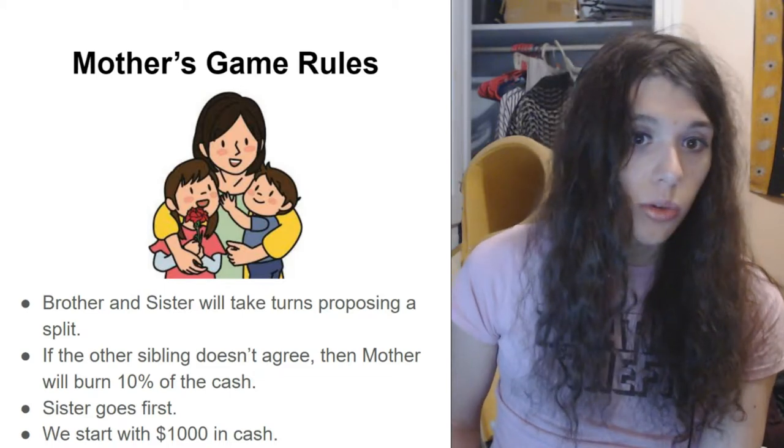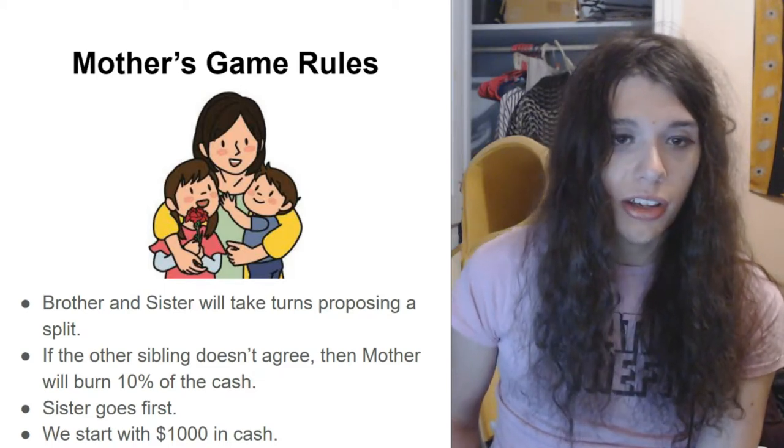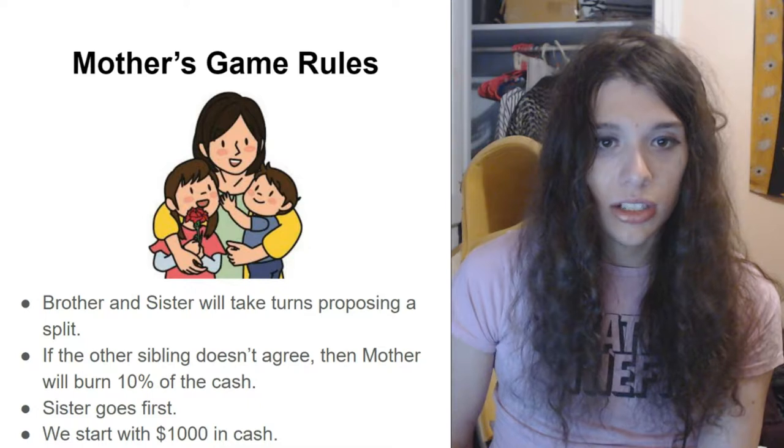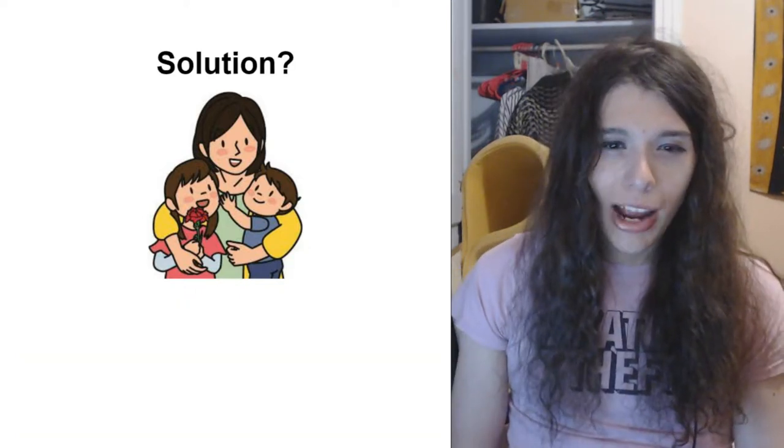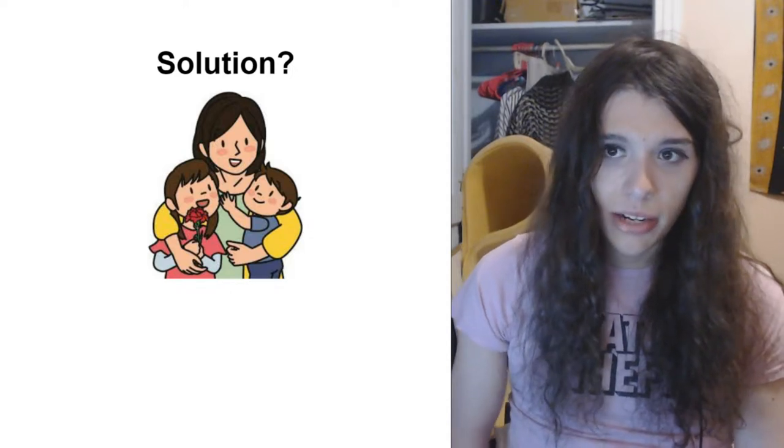Then sister will be able to offer another split, and it continues until we reach a compromise or all the cash is burnt. So we want to be able to rationally resolve this. So what is the rational way to play out this game?